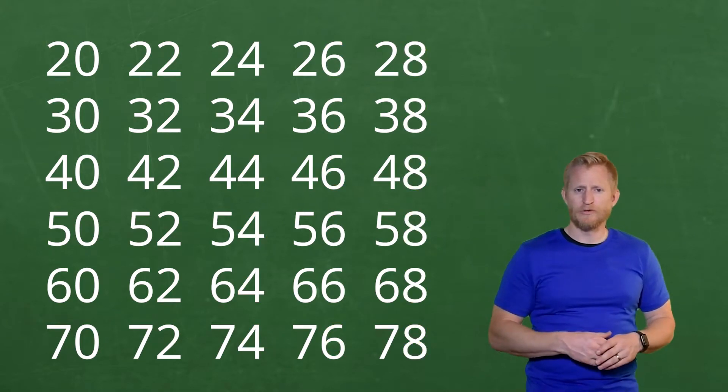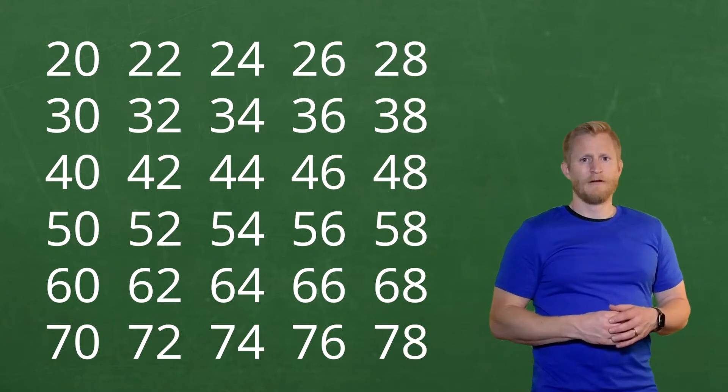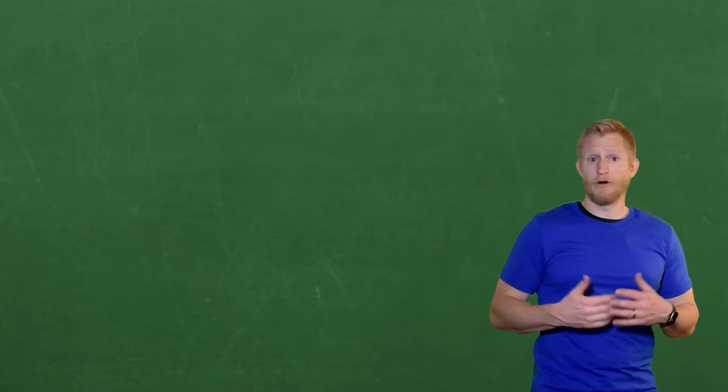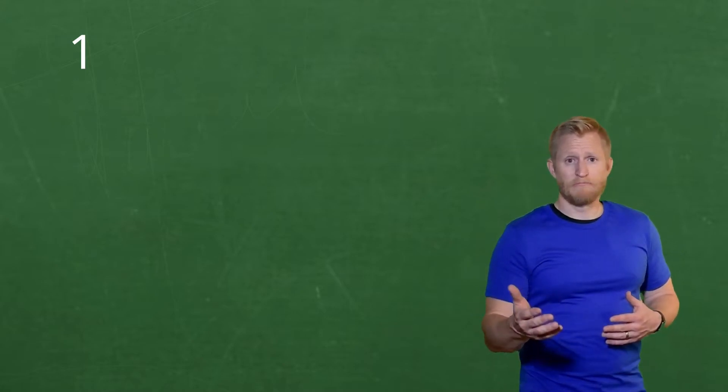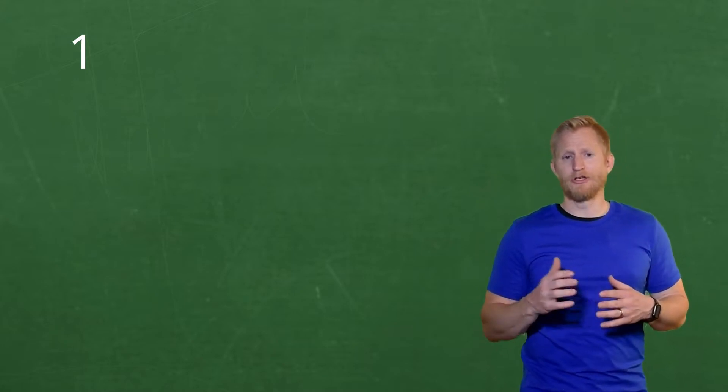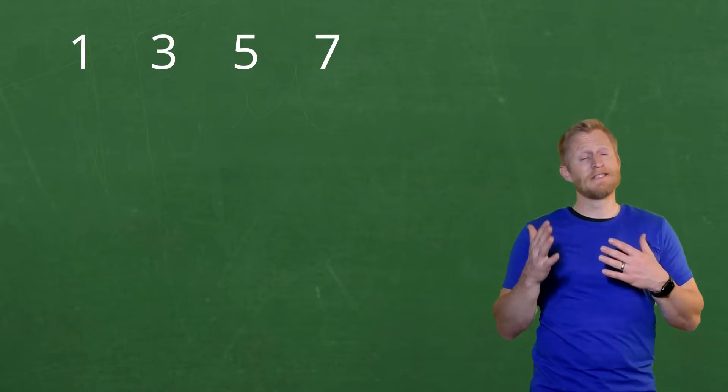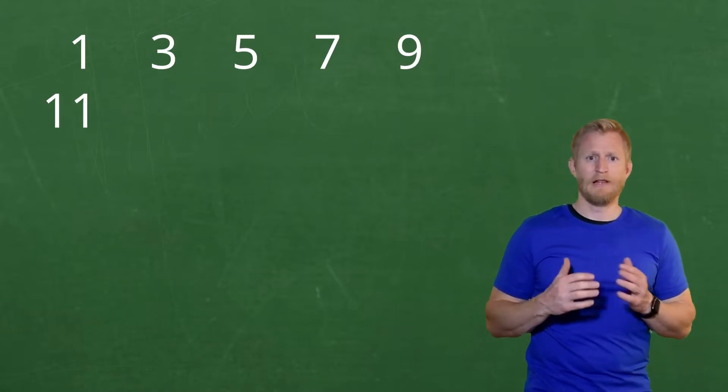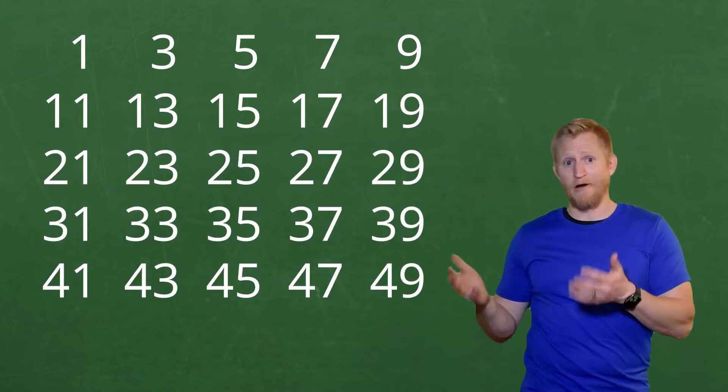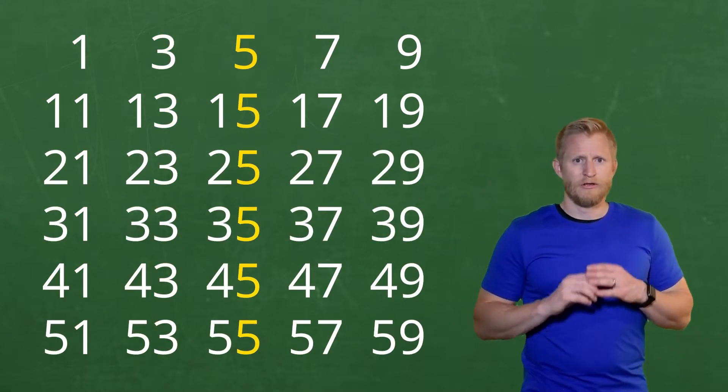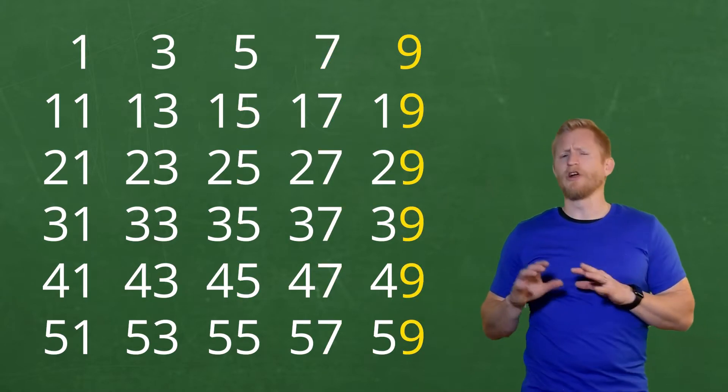That's counting by twos starting at zero. We can also count by twos starting with any other number. For example, we can start with one and count by twos, which would give us one, three, five, seven, nine, eleven, thirteen, and on and on. Just like starting with zero, you probably notice a pattern when we start with one.